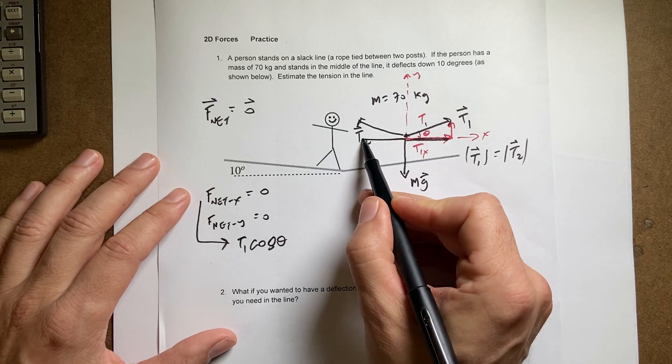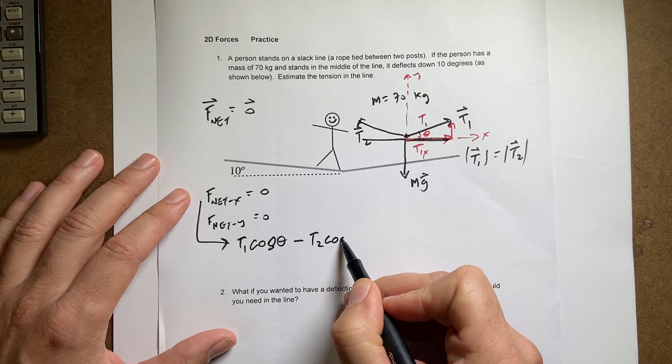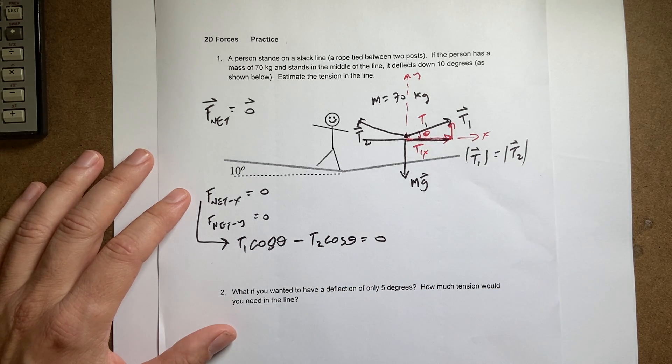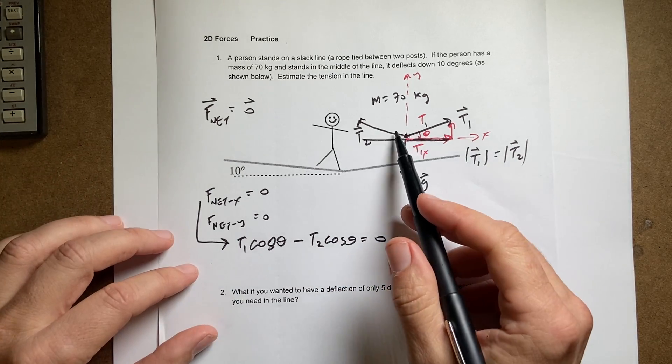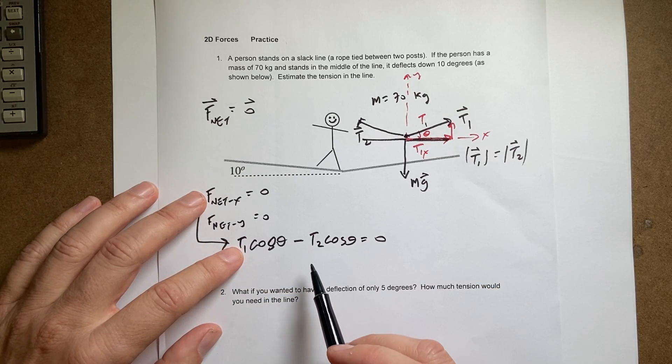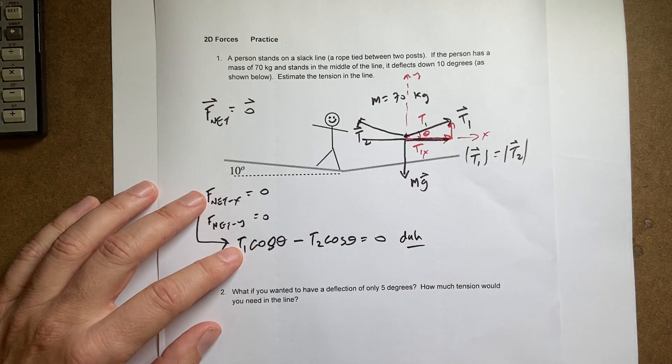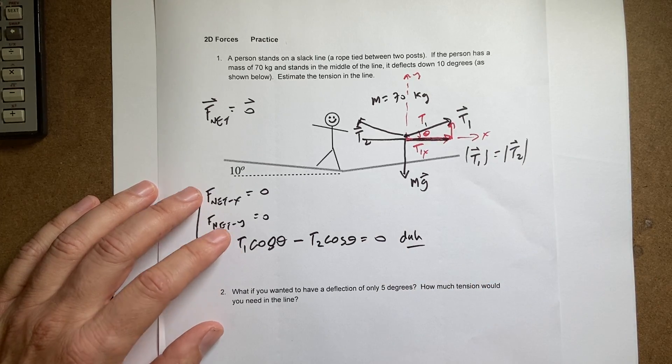Now what about this one? Same thing. This is going to be minus T2 cosine theta equals zero. Now they have the same angle and they have the same magnitude. So I get T1 cosine theta equals T2 cosine theta. Duh. We already knew that. So that's not that helpful.